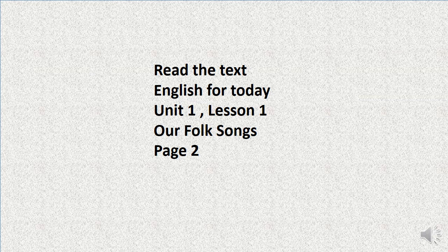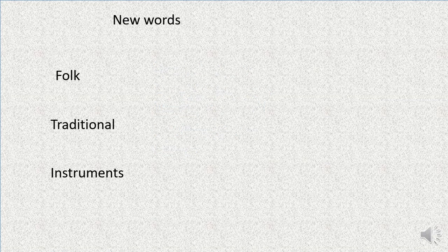After completing the lesson we will be able to read and understand text, infer meaning from context, ask and answer questions, and write a paragraph. Let's start our class — Unit 1, Lesson 1: Our Folk Songs, found on page 2 of your 'English for Today' book. Before starting, we must look at the new words of this passage.